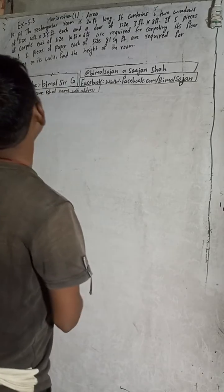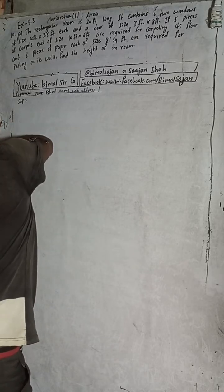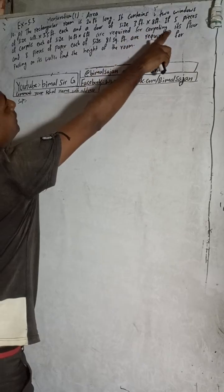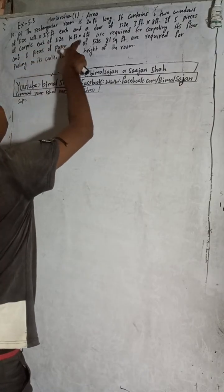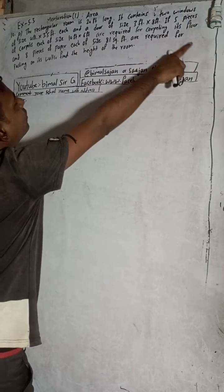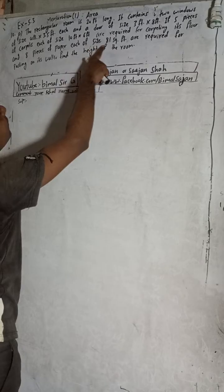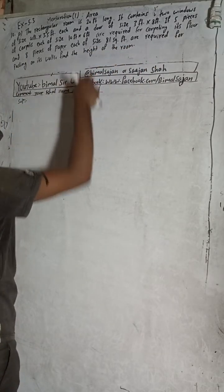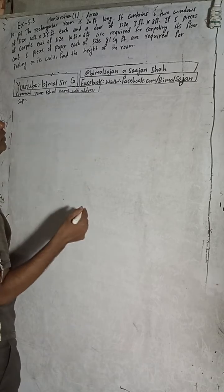A room is 20 feet long. It contains two windows of size 4 feet by 3.5 feet each, and a door of size 3 feet by 8 feet. If five pieces of carpets each of size 10 feet by 6 feet are required for carpeting its floor, and eight pieces of paper each of size 81 square feet are required for pasting on its walls, find the height of the room.